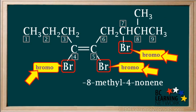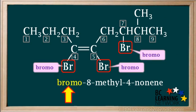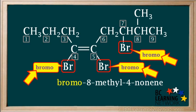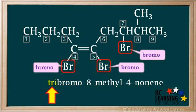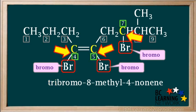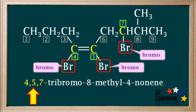The group that comes first in the name is bromo. Because we have three bromo groups, we add the prefix tri in front of the bromo. The next step is to specify which carbon atoms these three bromo groups are attached to. We see that the bromo groups are attached to carbons four, five, and seven, so we write four comma five comma seven dash in front of tribromo.